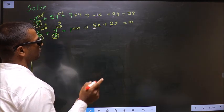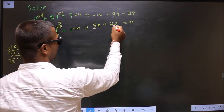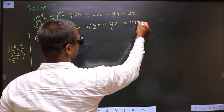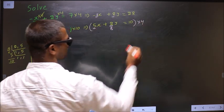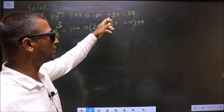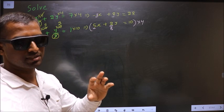So to make y coefficient same, here I should get 8. So to get 8 here, I should multiply this equation with 4. Clear? If I multiply, then only I get 8. Then only y coefficient becomes same.